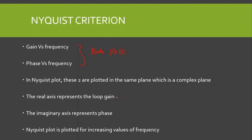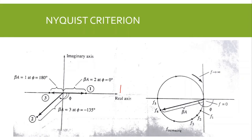In the Nyquist plane, the real axis (x-axis) represents the magnitude of the loop gain, and the imaginary axis (y-axis) represents the phase. The Nyquist plot is plotted for increasing values of frequency. So we plot the loop gain on the x-axis and the phase on the y-axis for increasing values of frequency. On the real axis we have the magnitude of the loop gain (beta-A), and on the imaginary axis we have the phase phi.